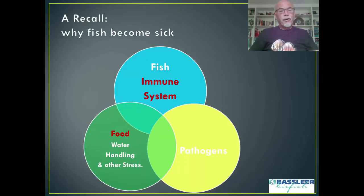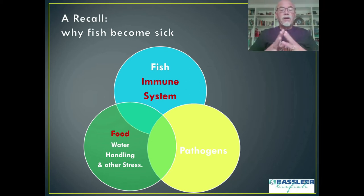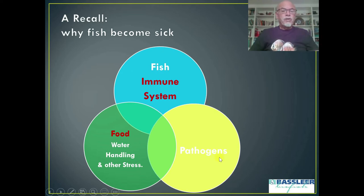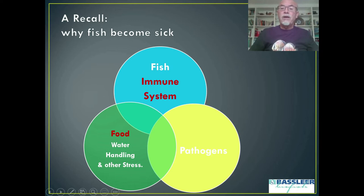First, I would recall what I present in many of my presentations: why fish become sick. I will go into details on the reasons why fish become sick for my VIP patrons in later presentations. In short, fish have an immune system, and there are pathogens available in the environment, in the water, in food, and the quality of food, handling, and stress all have an impact depending on how strong the immune system of the fish is.